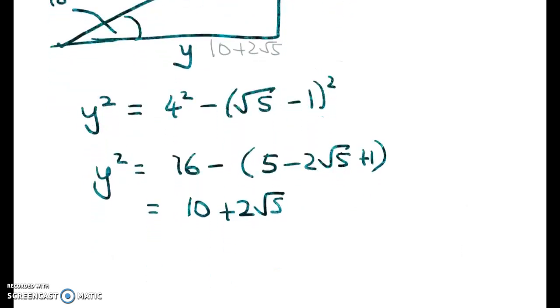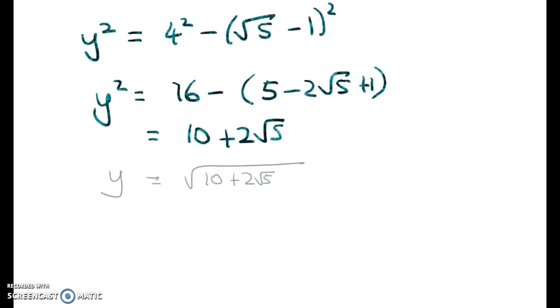We can go back up to our triangle and write that on. It's the square root of that. So y is equal to the square root of 10 plus 2 root 5, giving me cosine of 18 is equal to adjacent over hypotenuse. So root 10 plus 2 root 5 over 4.